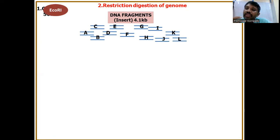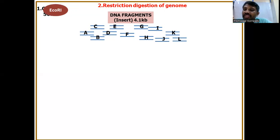After digestion, the DNA fragments are less than 5KB, so you can choose a plasmid as the vector. A plasmid can accommodate a 5KB insert easily. Based on the size of the insert, you change the vector system: for 4–6KB use plasmids, for 10KB use lambda phage insertion vectors, for 20KB use lambda phage replacement vectors, and for 40KB use cosmids.